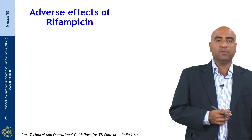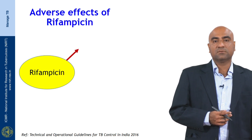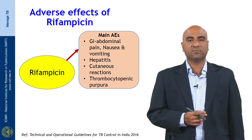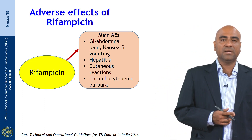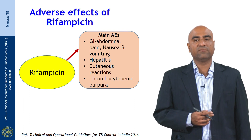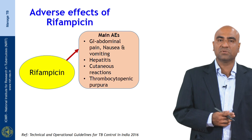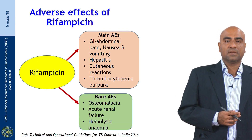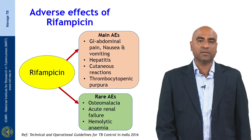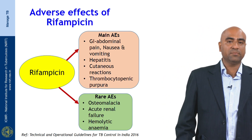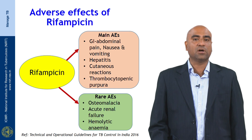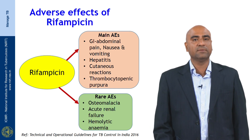The next very important drug in the TB regimen is rifampicin. The common side effects of rifampicin are mainly gastrointestinal. The main problem with rifampicin is tolerance — many patients develop acidity, abdominal pain, nausea, and vomiting. Other side effects include hepatitis, cutaneous reactions, and thrombocytopenic purpura. Rare adverse effects include osteomalacia, acute renal failure, and hemolytic anemia. We should have knowledge of all these adverse effects even though they are not commonly seen in practice.